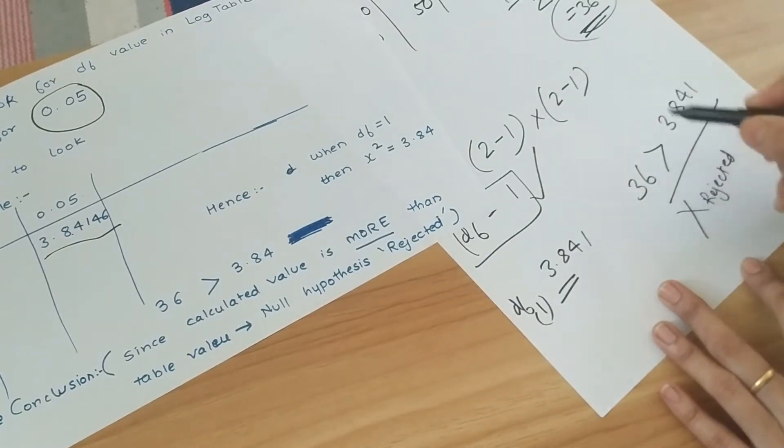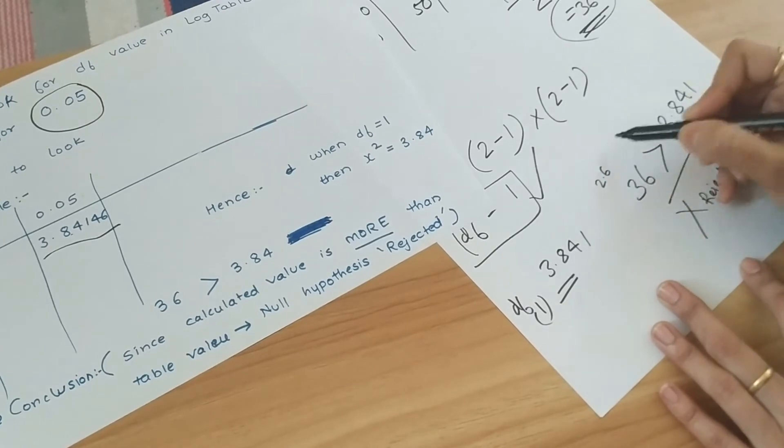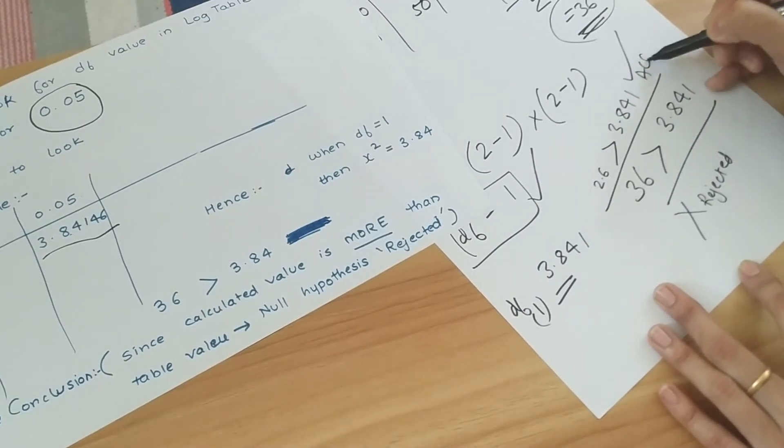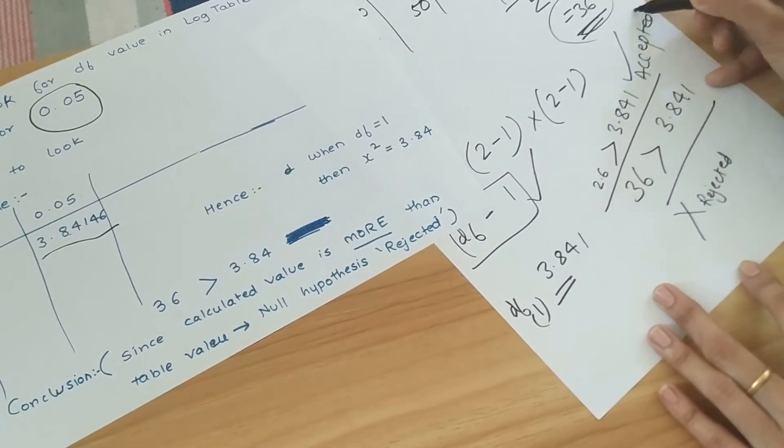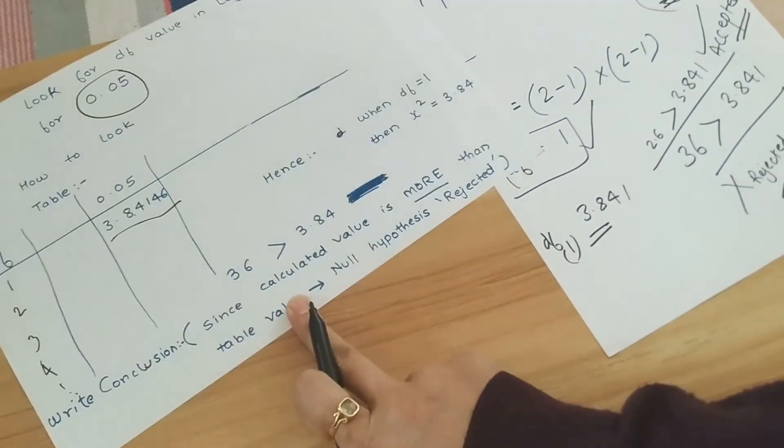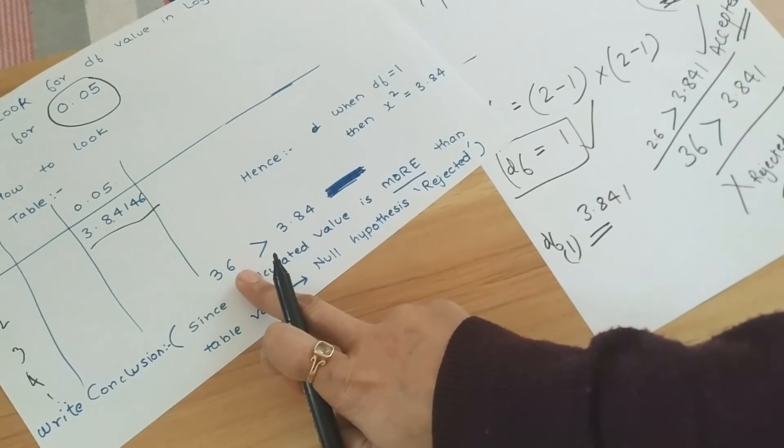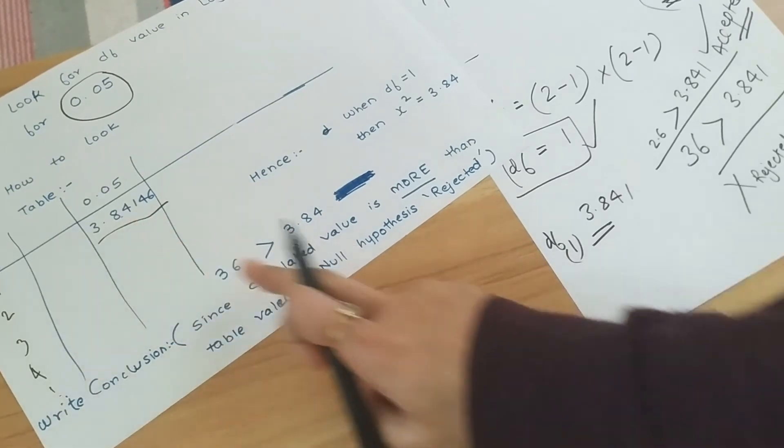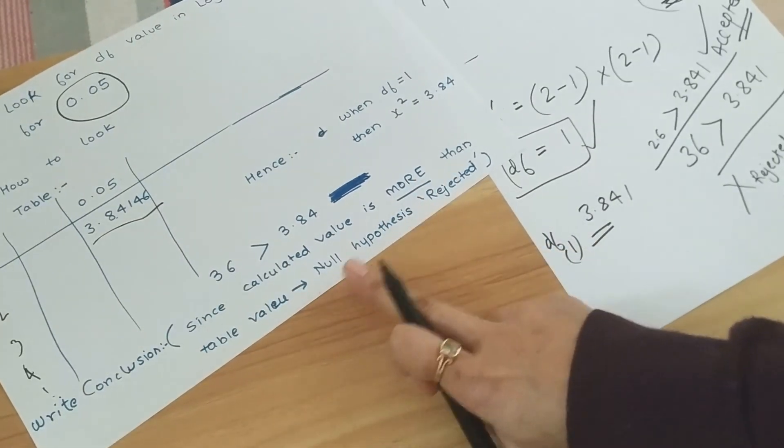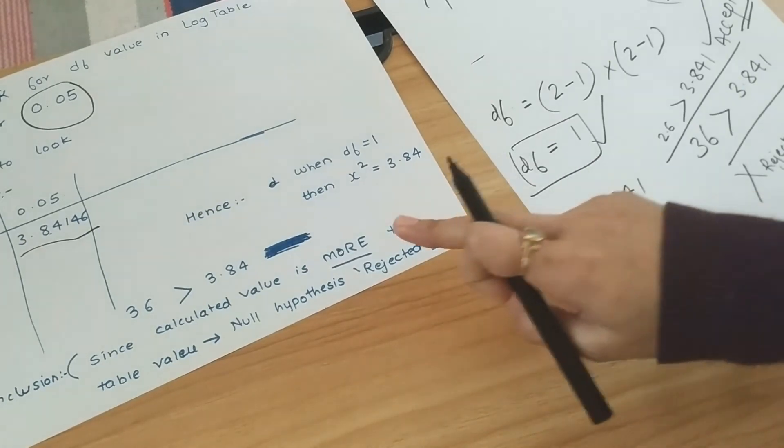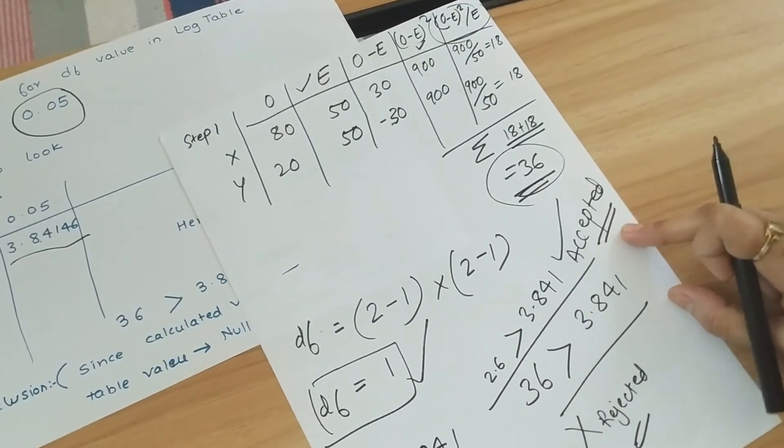And if it was less, maybe somewhere it was 2.6, so if it was less than 3.841, then null hypothesis would be accepted. So we have to write down this conclusion: when the calculated value is greater than what we just found out for the df, then the null hypothesis is rejected. And if it is less than, it is accepted.